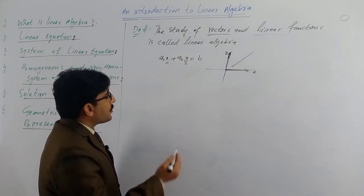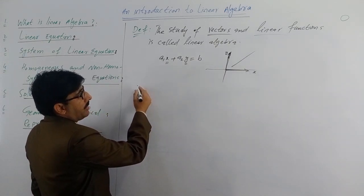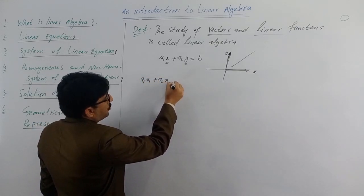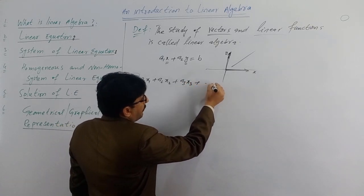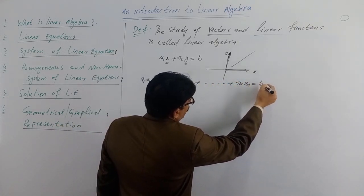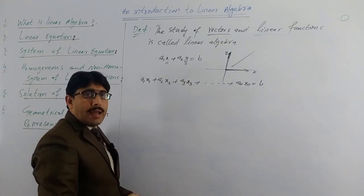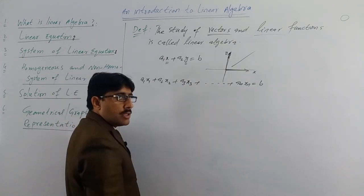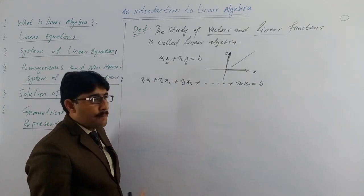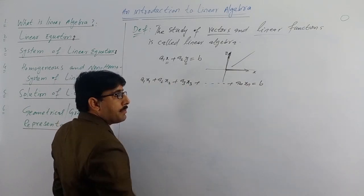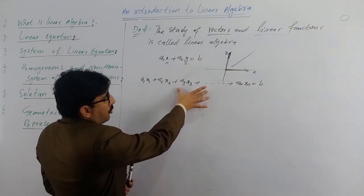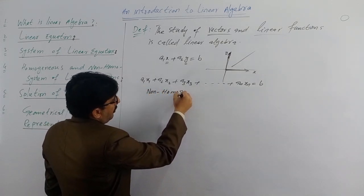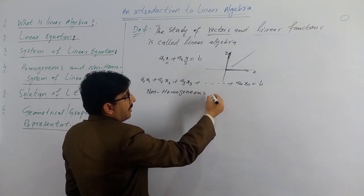More generally, the equation of a straight line in n dimensions with n unknowns کو ہم لکھ سکتے ہیں: a1x1 + a2x2 + a3x3 + ... + anxn = b. This is the equation of a straight line in n unknowns. x1, x2, x3 up to xn یہ unknowns یا variables ہیں، اور a1, a2, a3 up to an and b are the constants. اس equation کو ہم کہتے ہیں non-homogeneous linear equation۔